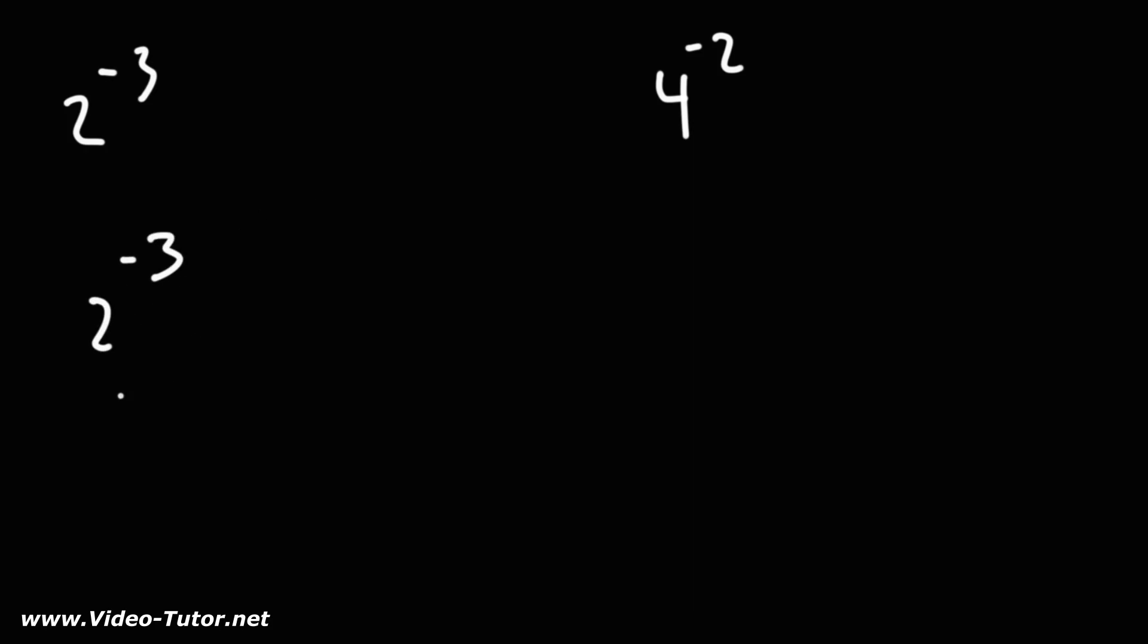2 to the negative 3, let's put this over 1. This is equal to, something that you're allowed to do is if you move the 2 from the top of the fraction to the bottom, the exponent will change sign. So this is equivalent to 1 over 2 raised to the third power.